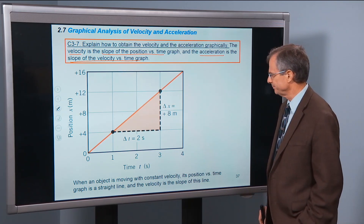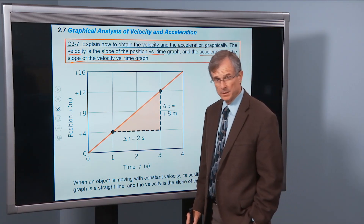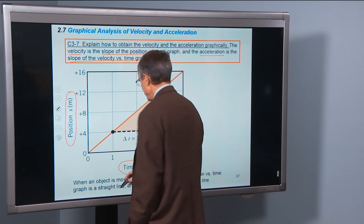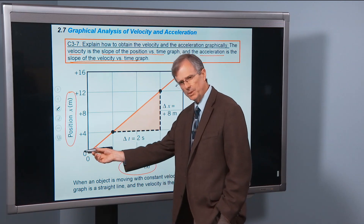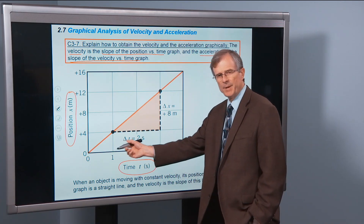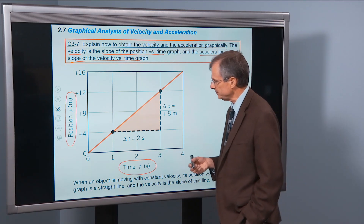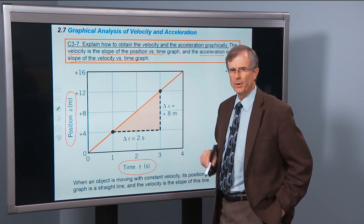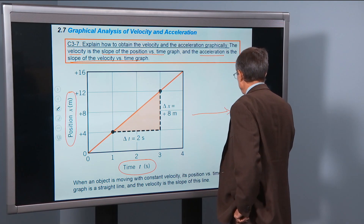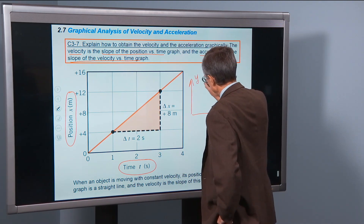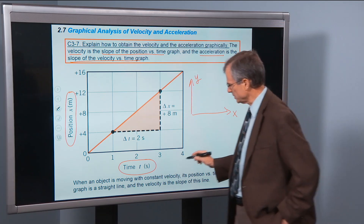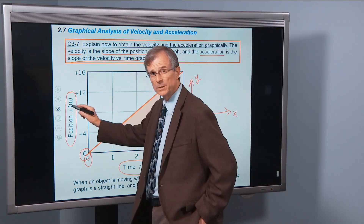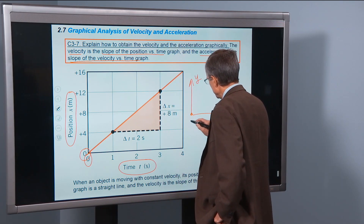Let's look at what happens graphically. We're going to plot position as a function of time. The horizontal axis is the time axis — as you move along it, you're seeing time as it occurs. The vertical axis is the position. So let's ask what this particular position versus time graph tells us. We have the plus x direction, plus y direction, and at time t equals 0 seconds, the position is 0 meters. This is where the object is at 0 seconds.